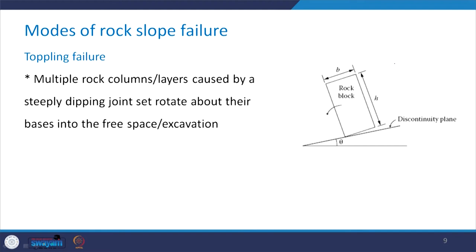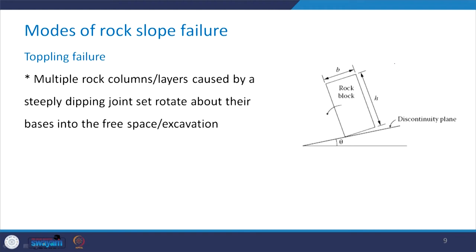The next mode of rock slope failure is toppling failure. This occurs where we have multiple rock columns or layers caused by a steeply dipping joint set, and when they rotate about their bases into the free space or excavation. When a steeply dipping rock block rotates about its base, there is a chance that the toppling of this block will take place.